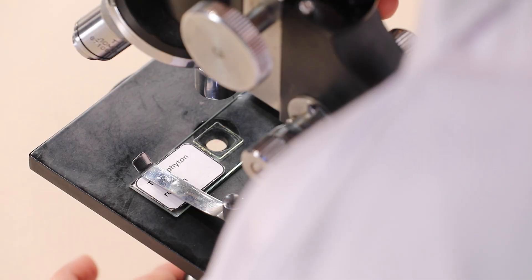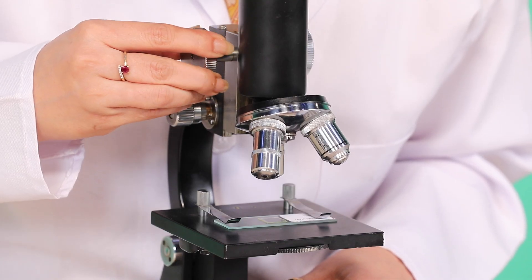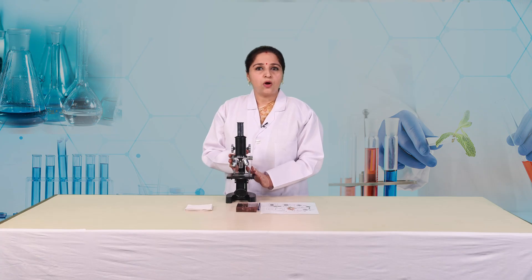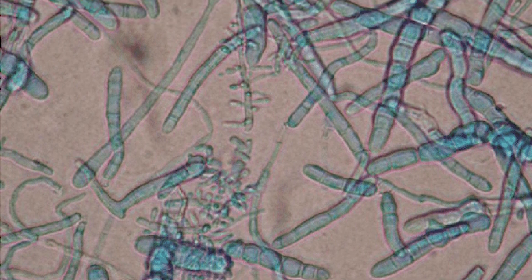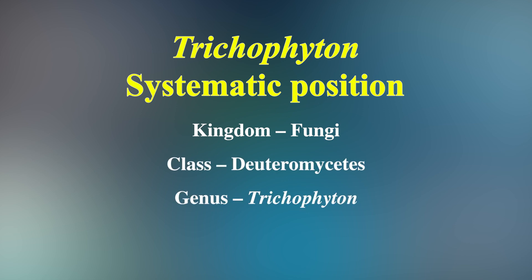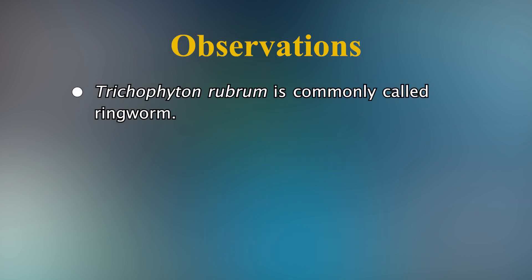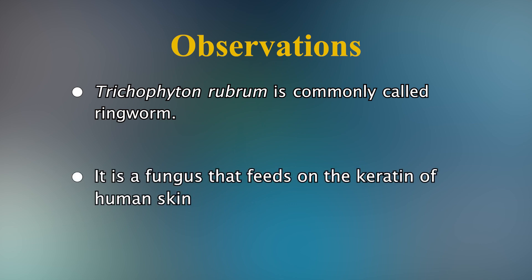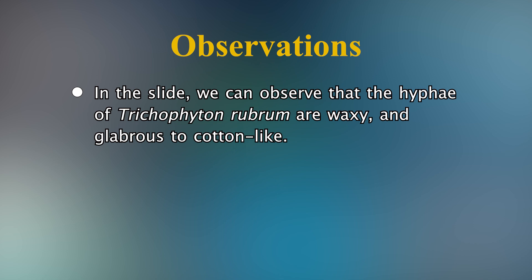Let us understand about another pathogen, Trichophyton rubrum. We will take the permanent slide of Trichophyton rubrum and observe it under the low power of the compound microscope. Let us focus it properly and try to observe the features. We can also observe it under high power of the microscope. Trichophyton rubrum is commonly called ringworm. It is a fungus that feeds on the keratin of human skin. In this slide, we can observe that the hyphae of Trichophyton rubrum are waxy and glabrous to cotton-like.